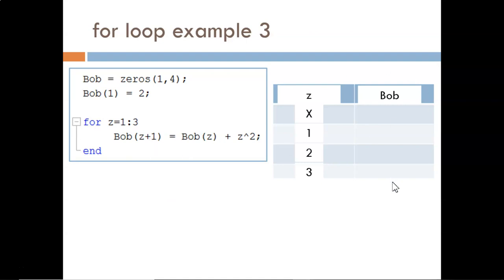Before reaching the loop, Bob will look like this vector. It was originally four zeros, but then the first index was assigned the value 2. Now entering the loop, z takes on the value 1.